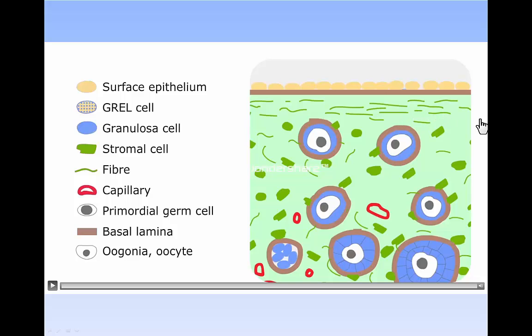In summary, the GREL cells on the surface have given rise to the ovarian surface epithelium, except at the base of the ovary where there always was an epithelium. And, GREL cells that were packaged with oocytes into follicles have given rise to the granulosa cells.